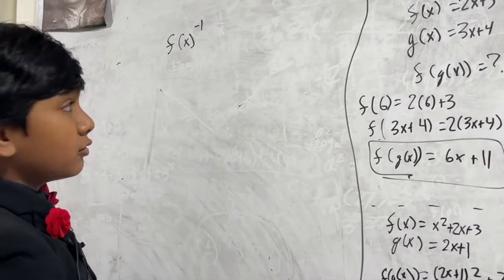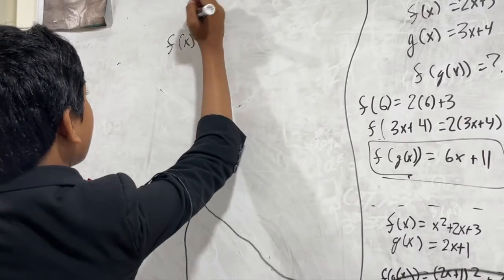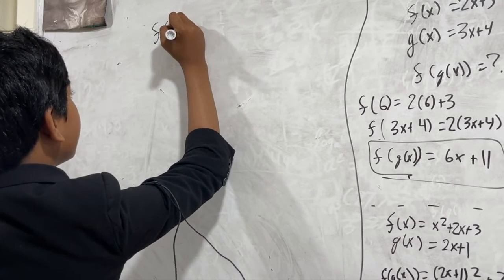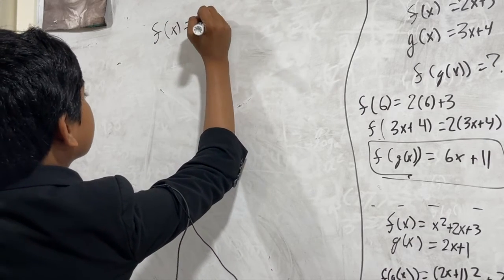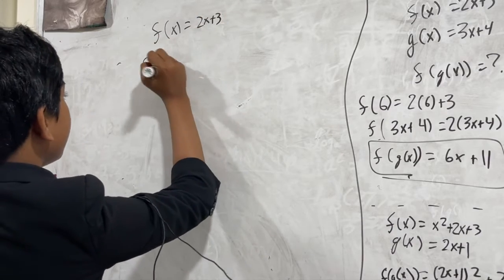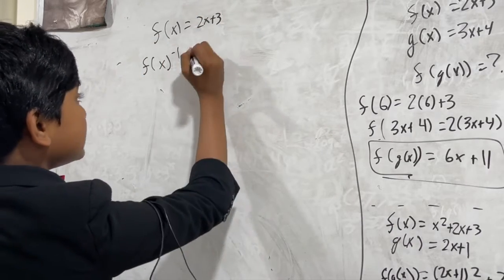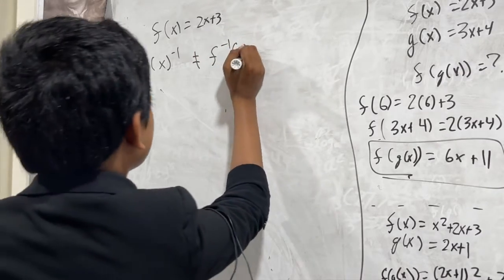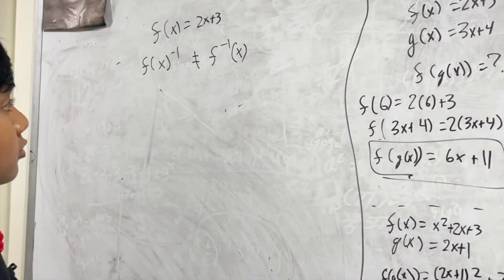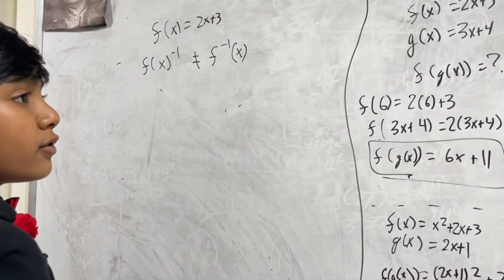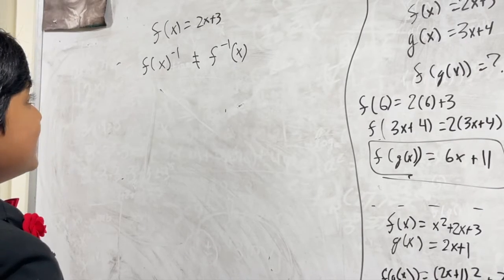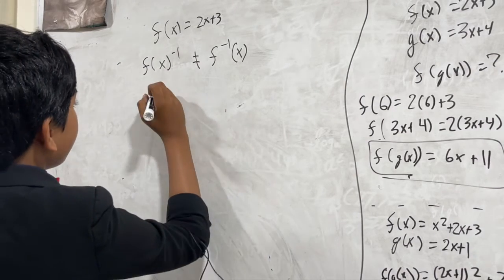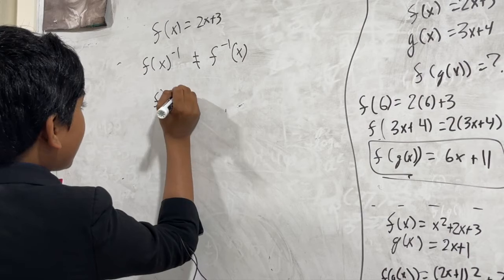Now, inverse functions are different from composite functions. Inverse functions are essentially when you change things around. For example, if you have f(x) = x²,